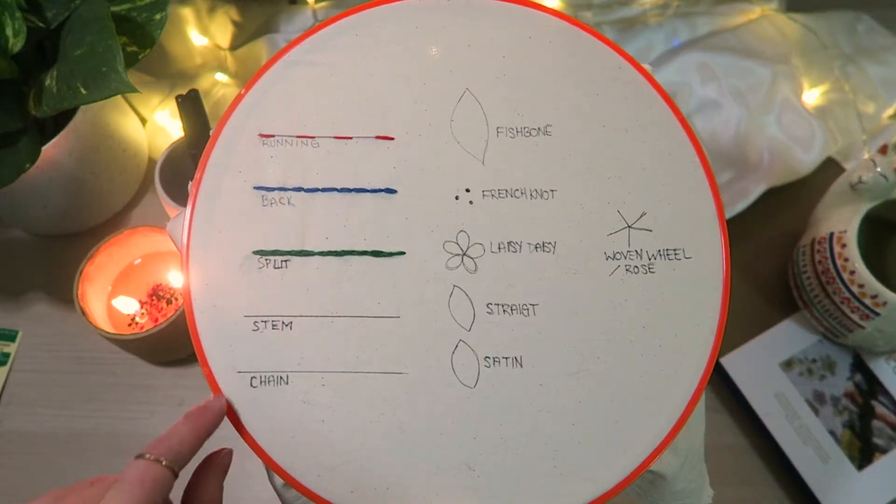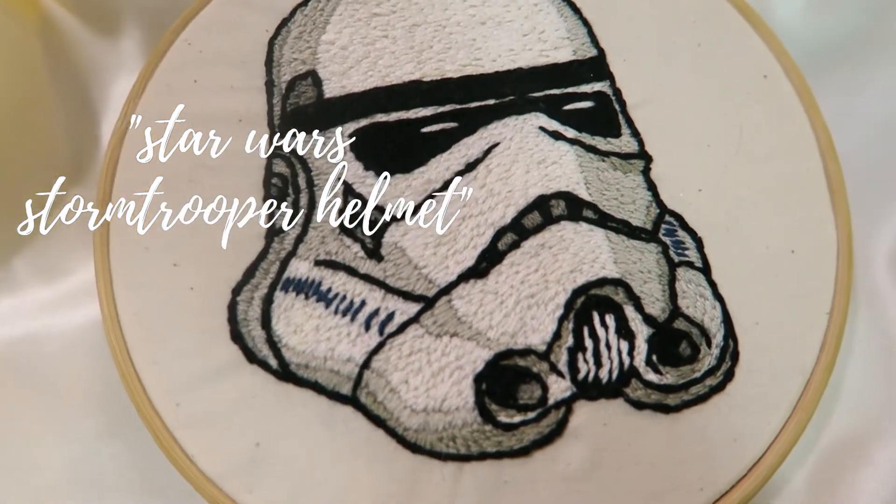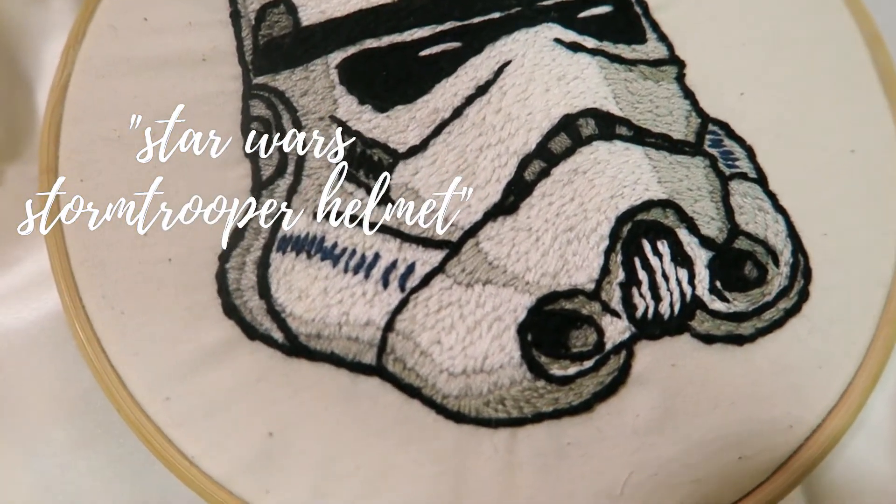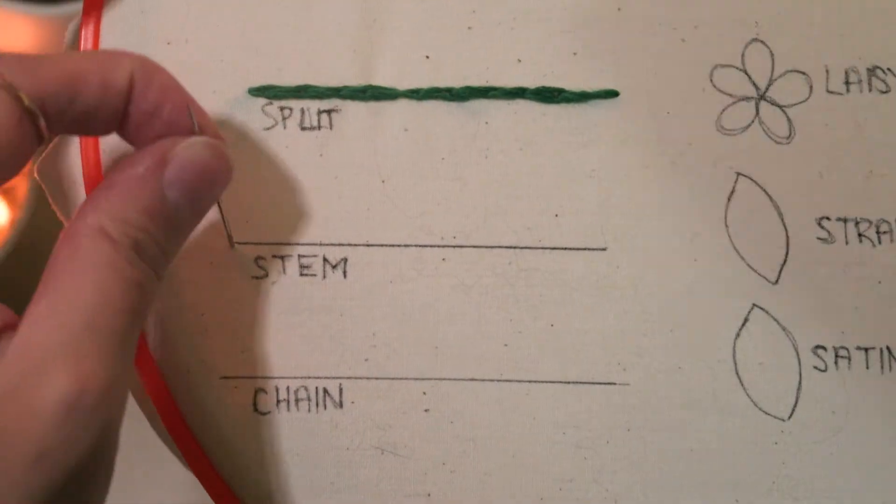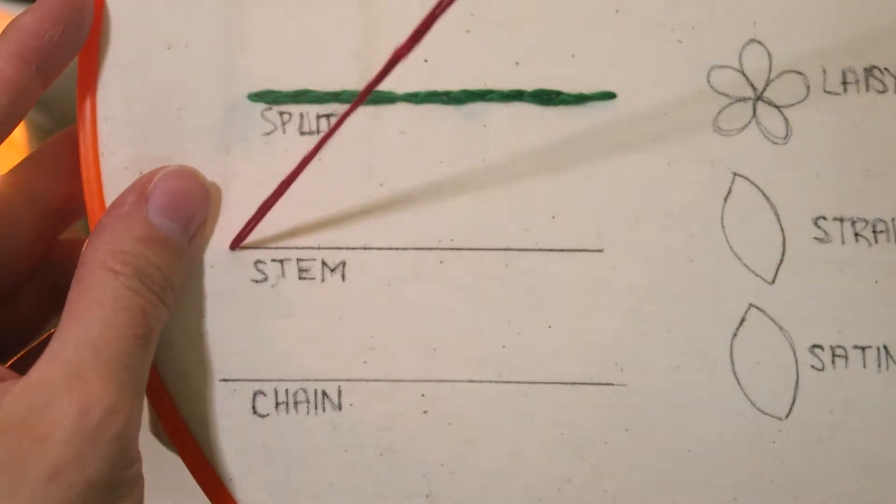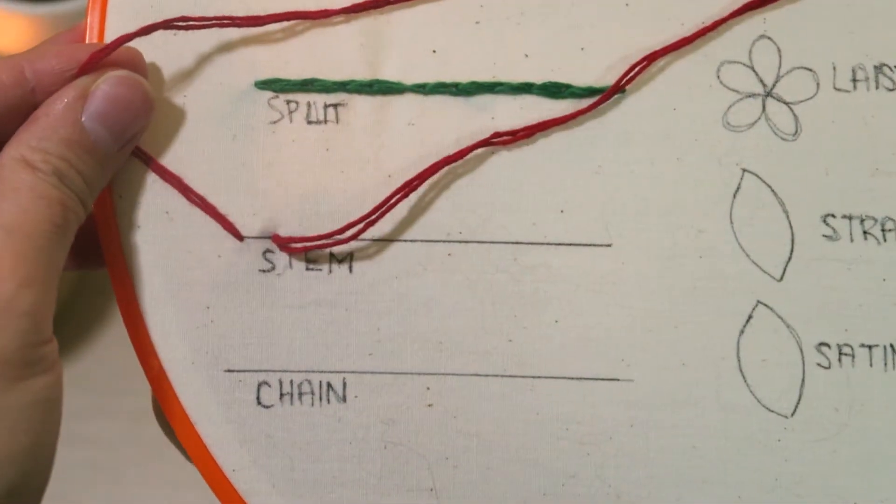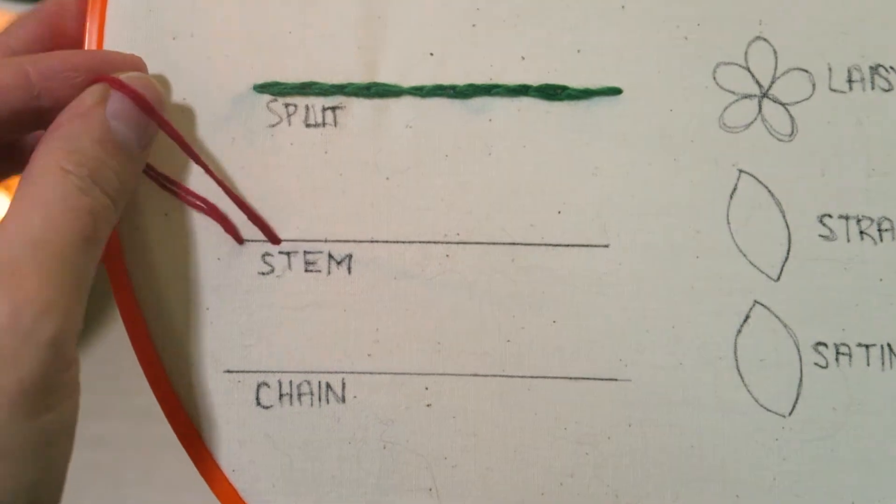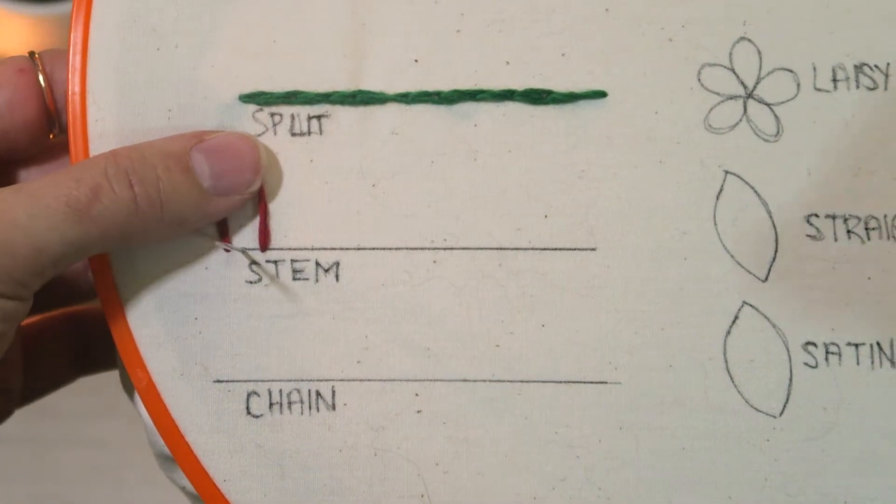Our fourth stitch is the stem stitch. If you have watched my previous videos you will know that I love using this stitch around borders. It gives everything a nice completed look. This stitch is similar to the split stitch however when you come back to the front halfway between your previous stitch we do not want to separate the thread strands.